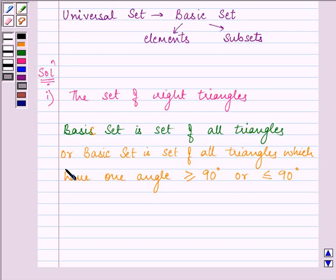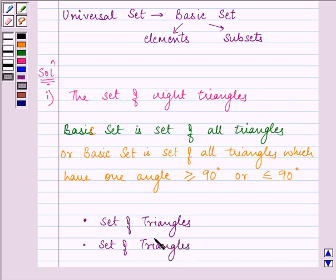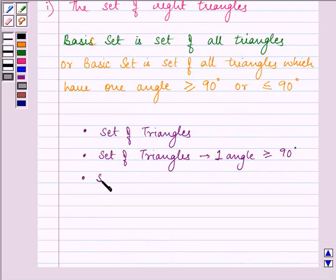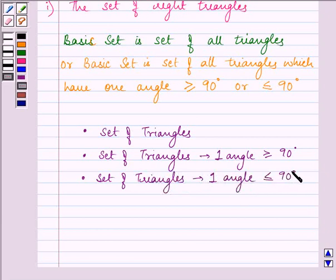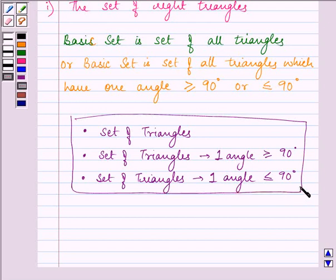So these are the three basic sets which can be formed and the answer will be set of triangles, set of triangles in which one angle is greater than or equal to 90 degrees, or it can be set of triangles in which one angle is less than or equal to 90 degrees. So that means this becomes the answer of our first part.